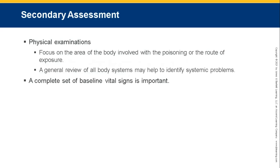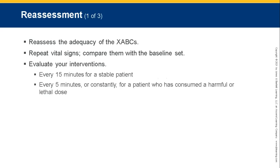Secondary assessment — physical examination: focus on the area of the body involved with the poisoning or route of exposure. A general review of all body systems may help identify systemic problems. Obtain a complete set of baseline vital signs. Reassessment: reassess the adequacy of the XABCs, repeat vital signs and compare with baseline, evaluate your interventions — every 15 minutes for a stable patient, and every 5 minutes or constantly for a patient who has consumed a harmful or lethal dose.